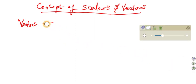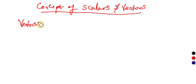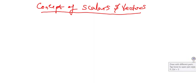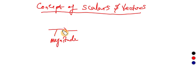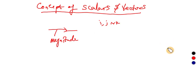All right, let us continue with vector representation. You represent vectors by a line with an arrow. The line shows the magnitude or the size, while the arrow shows the direction. We can also represent vectors in unit vectors of i, j, or k, which we shall see later in this video.